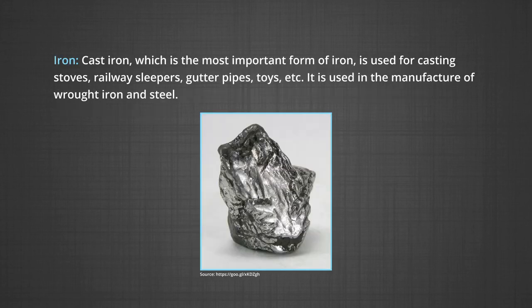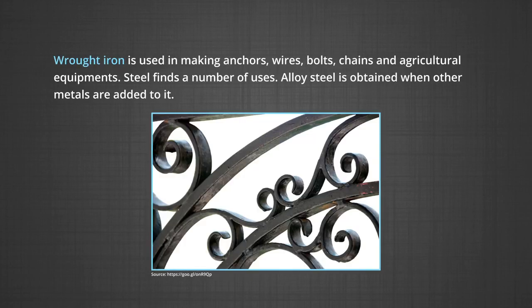Uses of iron. The cast iron, which is the most important form of iron, is used for casting stoves, railway sleepers, gutter pipes, toys, etcetera. It is used in the manufacture of wrought iron and steel. The wrought iron is used in making anchors, wires, bolts, chains and agricultural implements. Steel finds a number of uses. Alloyed steel is obtained when other metals are added to it.